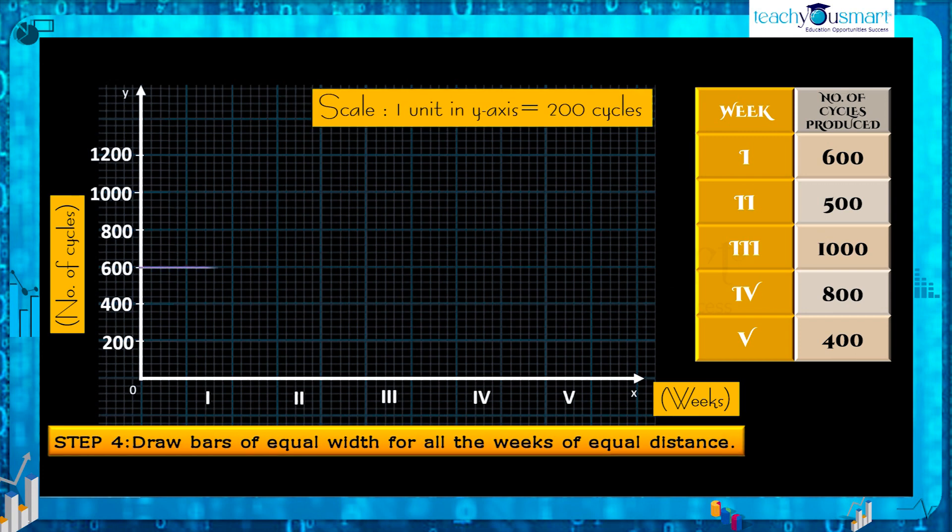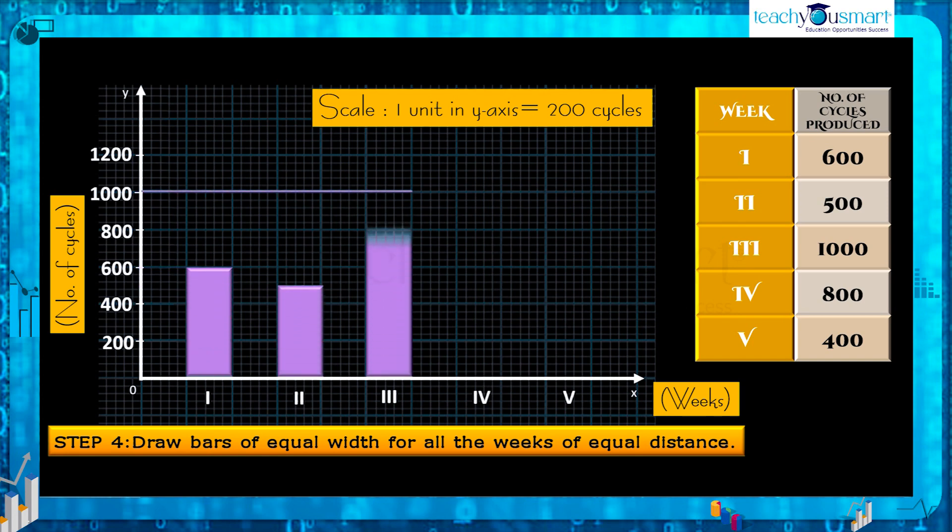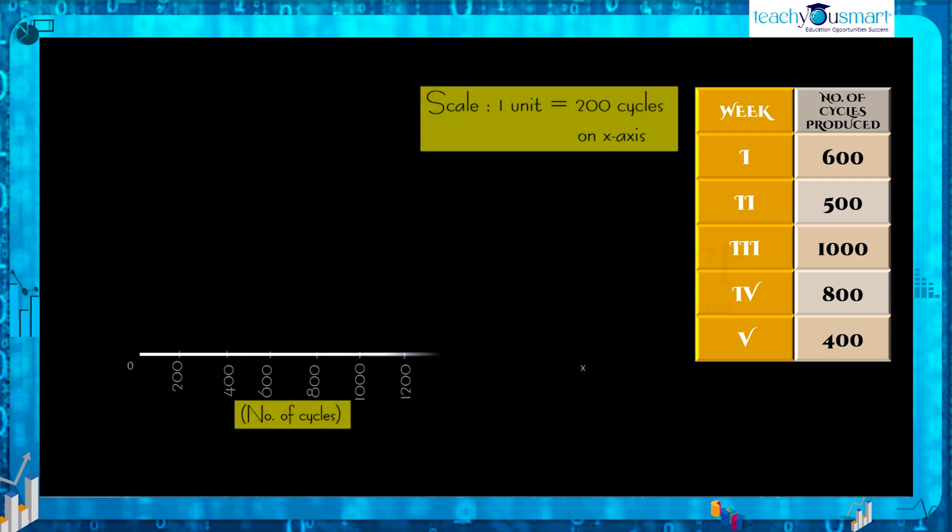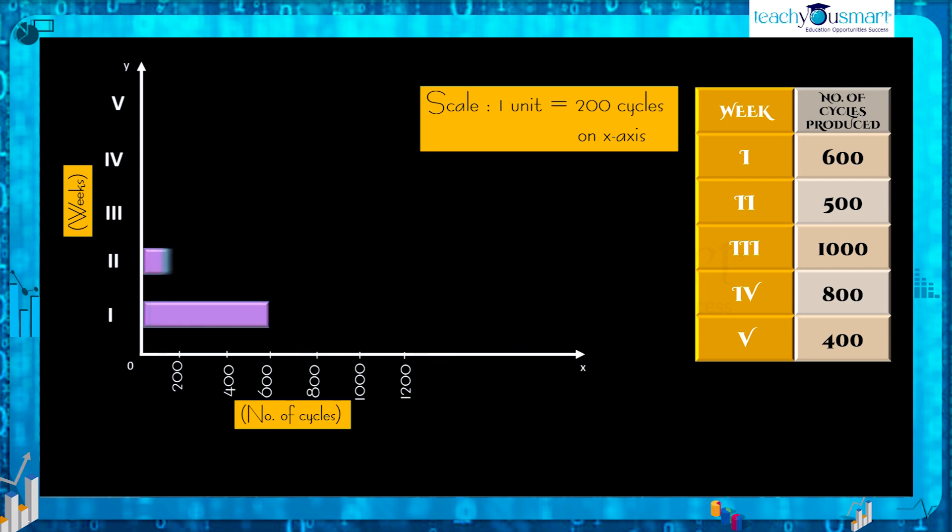Next draw bars of equal width for all the weeks of equal distance. Also we can draw this graph horizontally.